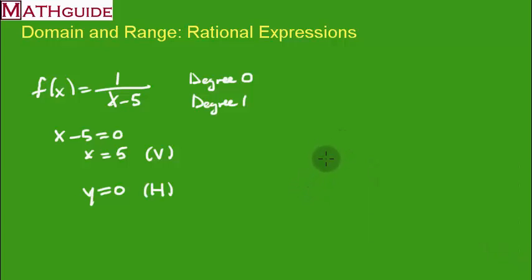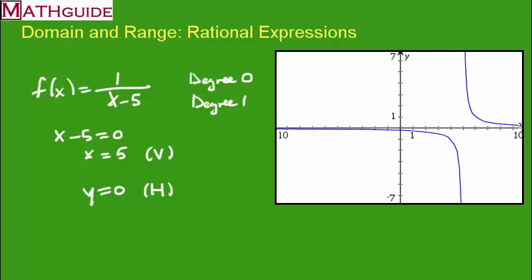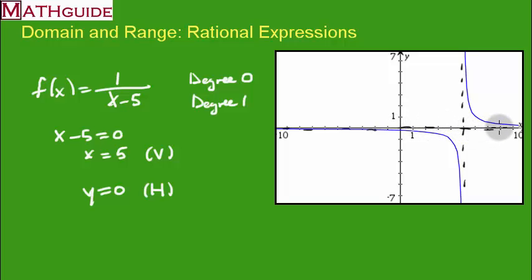Let's look at a diagram to see how this all pieces together to help us with domain and range. Looking at the graph, at x equals 5 we have the vertical asymptote, and y equals 0 — the x-axis — is our horizontal asymptote. The algebra and the diagram match.